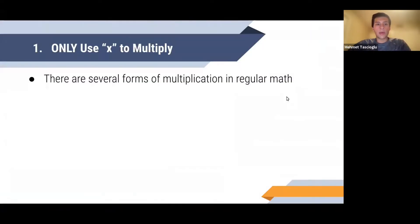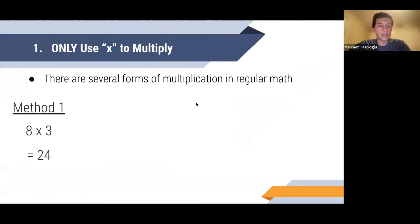Let's talk about the first difference: you're only going to use the × symbol when doing multiplication in equations. There are several forms of multiplication in regular math. Method one is, for example, eight times three equals 24, using the × symbol. That's 24 — that's good to go.